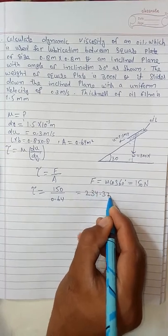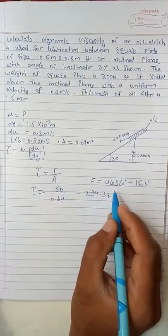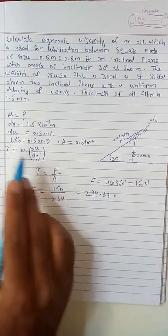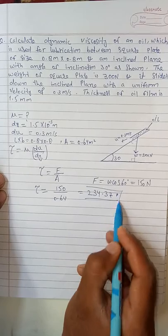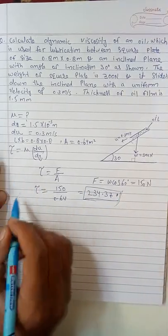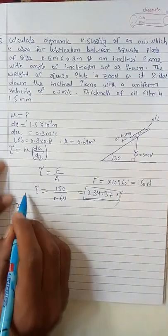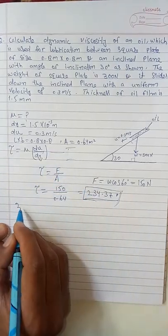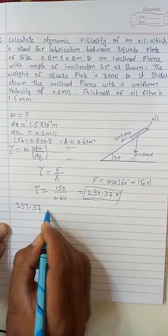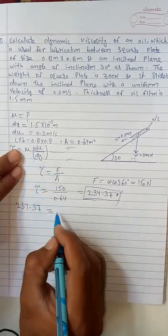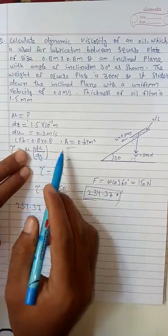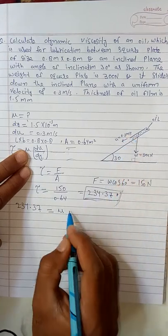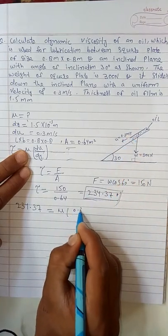Which comes out to be 234.37. So I can use this now. I can write—I will use this in equation 1—I will write 234.37 will be equal to μ, I have to find this μ, times du—du is the relative velocity, it is 0.3, because this pallet is fixed—I will write 0.3.